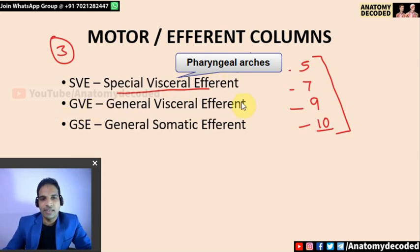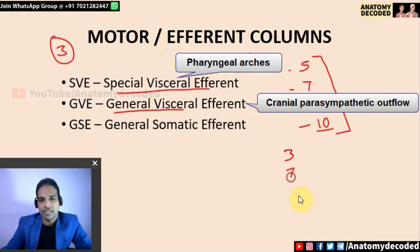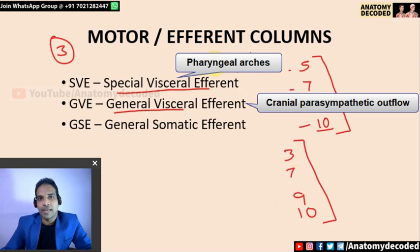General visceral efferent refers to the parasympathetic supply to the smooth muscles and glands of the body, also known as the craniosacral outflow. The cranial component is provided by cranial nerves 3, 7, 9, and 10, which form the cranial parasympathetic outflow included in the general visceral efferent column. All glands — submandibular, sublingual, parotid, and glands in the GI and respiratory tracts — are supplied by this component.